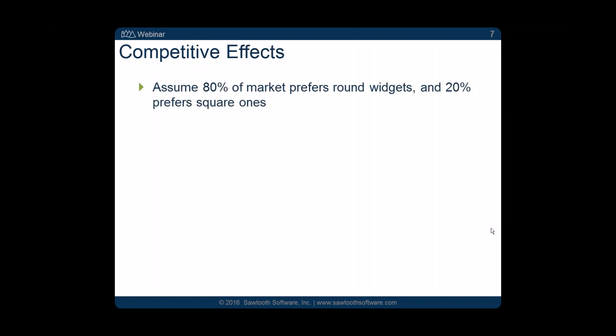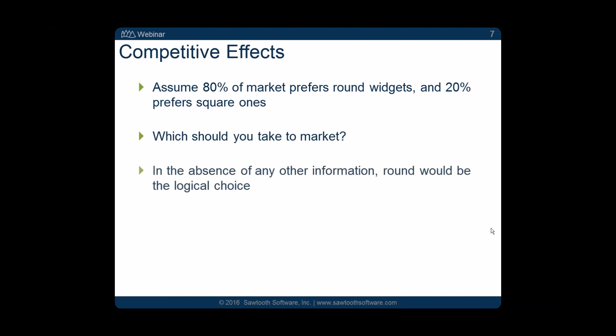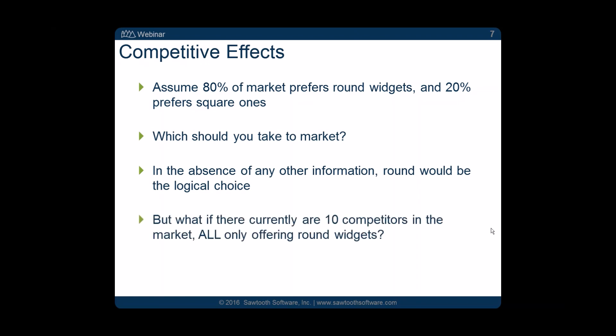Competitive effects: let's assume 80% of the market prefers round widgets and 20% prefers square widgets. If this is all we knew, we might think we ought to produce round widgets to satisfy 80% of customers. But if we knew the competitive landscape, we'd learn that all competitors are already producing round widgets and nobody's producing square widgets — so there's a niche available. When we build a simulator that includes competitors and their products, we can learn this sort of information.